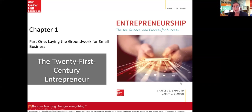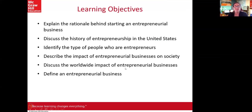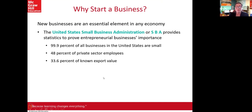The textbook is titled 'Entrepreneurship: The Art, Science and Process for Success.' Part One, chapters one through three, lays the groundwork for small business. Chapter one is titled 'The 21st Century Entrepreneur.' In this chapter we look at explaining the rationale behind starting a business, the history of entrepreneurship in the United States, different types of entrepreneurs, the impact of entrepreneurialism on society globally, and the definition of an entrepreneurial business.